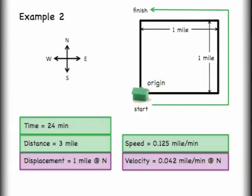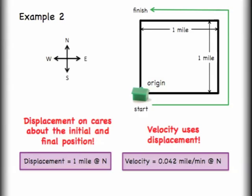If we want to look at why these two numbers are different, it has to do with one being a scalar and one being a vector. The vector quantities only care about the initial and final positions. So my displacement was actually only one mile away from where I started, one mile to the north to be specific. Since my velocity uses displacement in the equation, it also in a sense only cares about the initial and final positions.